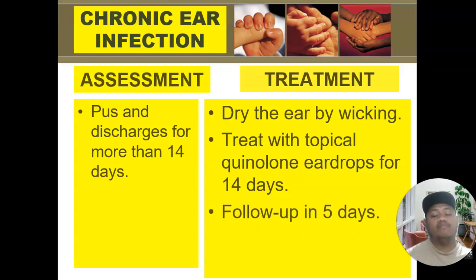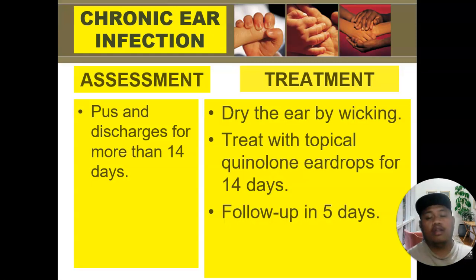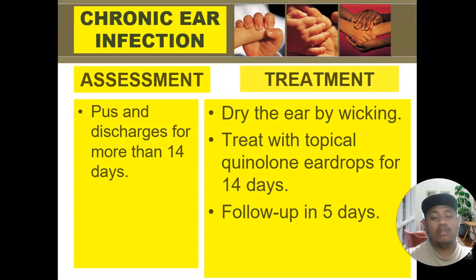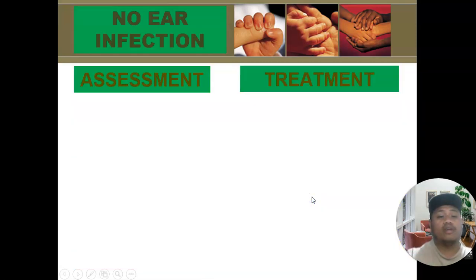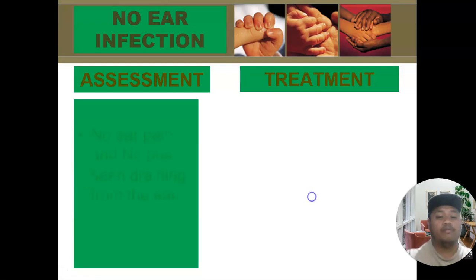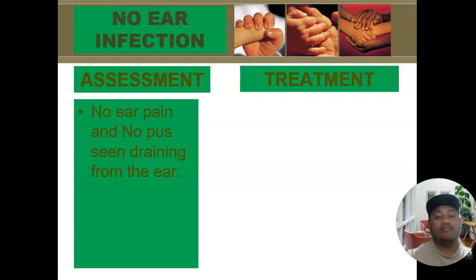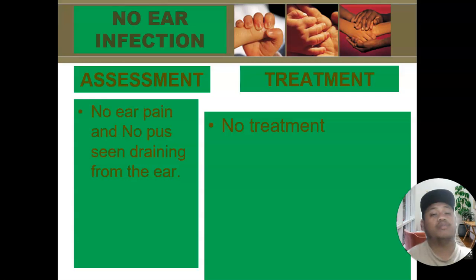Follow-up is still 5 days for chronic as well, same as acute. To summarize: acute is less than 14 days, chronic is more than 14 days. Both require dry wicking and a 5-day follow-up. Only acute ear infection receives amoxicillin twice a day for 5 days, and quinolone ear drops are only for chronic ear infection. The last classification is no ear infection — meaning no ear pain and no pus or discharge from the ear — and since there is no problem, no treatment is required.